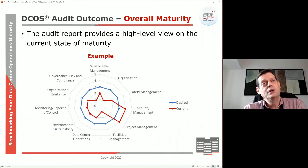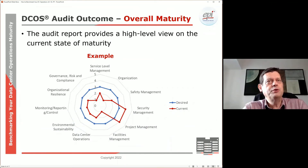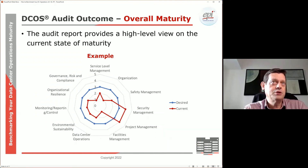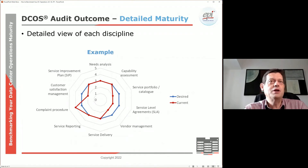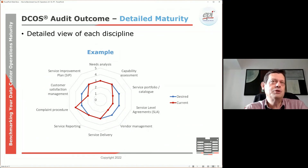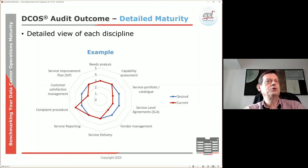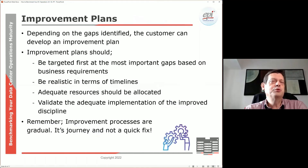Obviously, level five is where everything works nicely together and you have full management control over all processes within scope — that's the ultimate goal. When you do a DCOS audit, you get a chart showing where you are compared to your target. In this example, the target was level three; the customer overshot in some areas but undershot in quite a few others. The audit report provides guidance on things to consider to improve your processes and reduce risk.